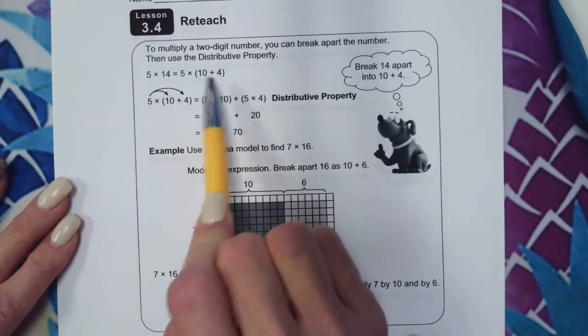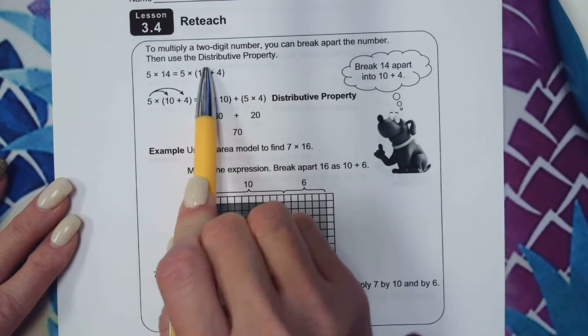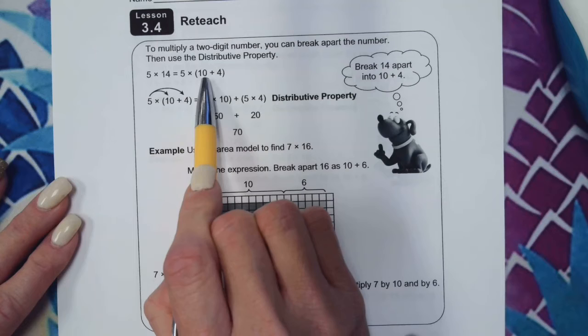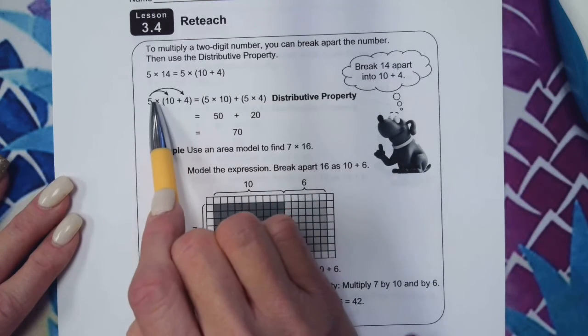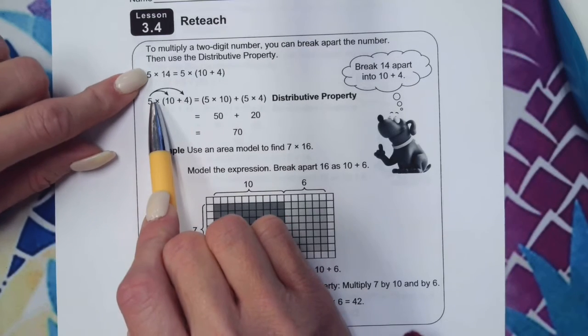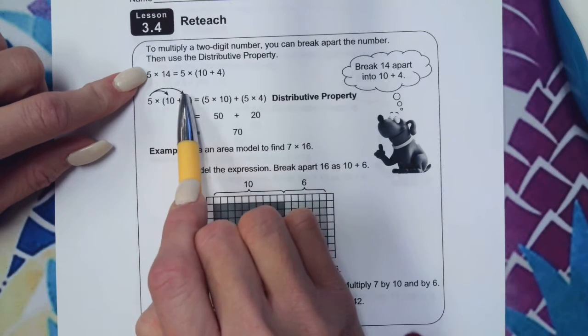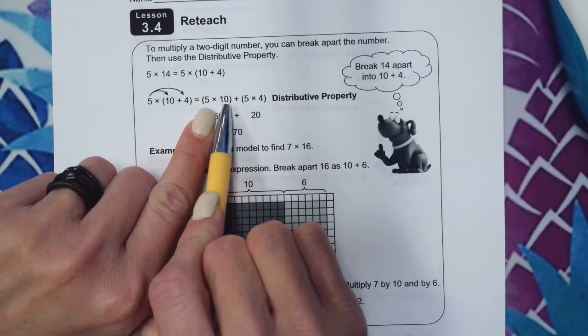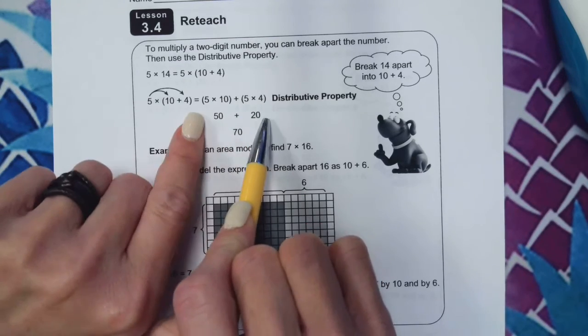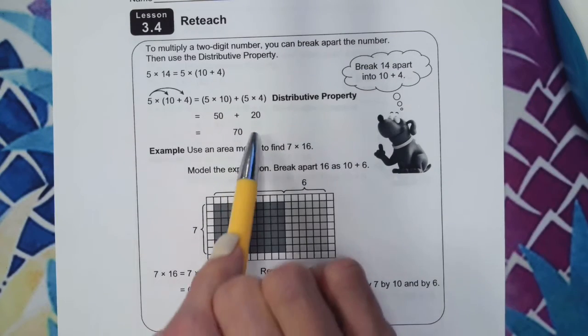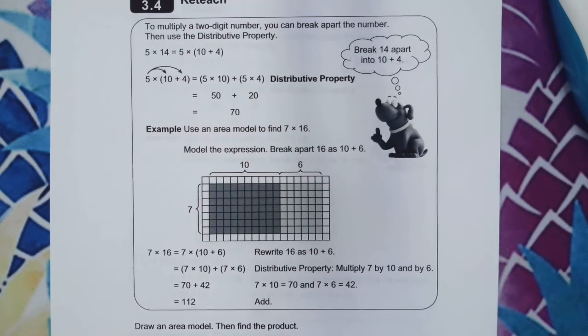You can see how 10 plus 4 equals 14. Now we're going to multiply both 10 and 4 times 5. So we take the 5 that came from the original problem and multiply: 5 times 10 is 50, 5 times 4 is 20. Then you add those products together, 50 plus 20, to find the total answer of 70.